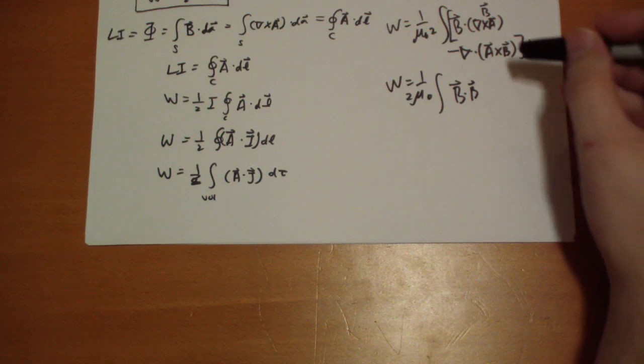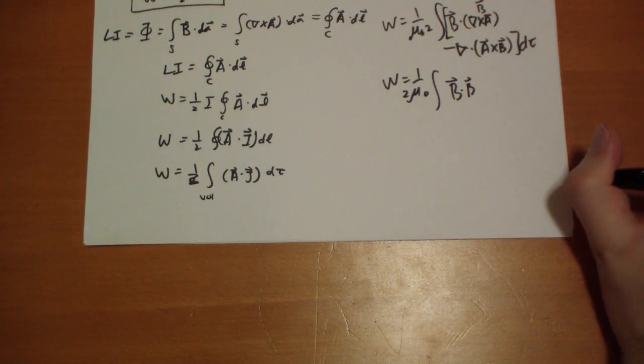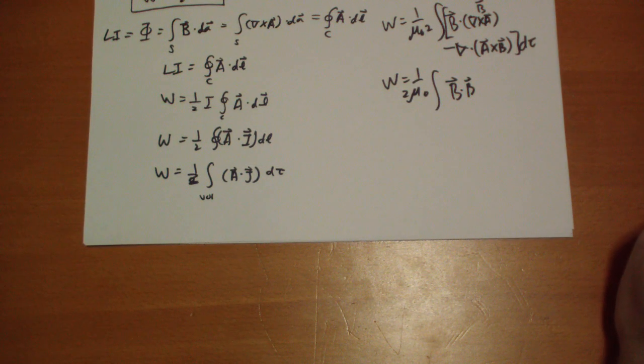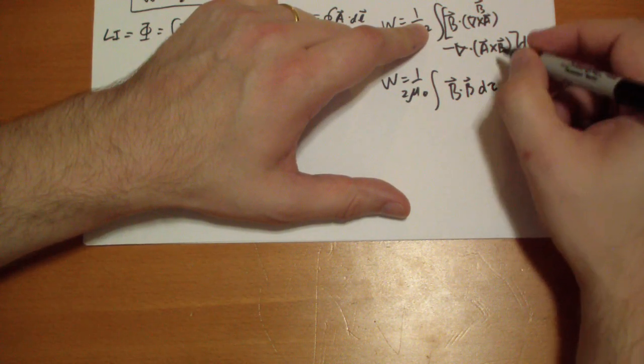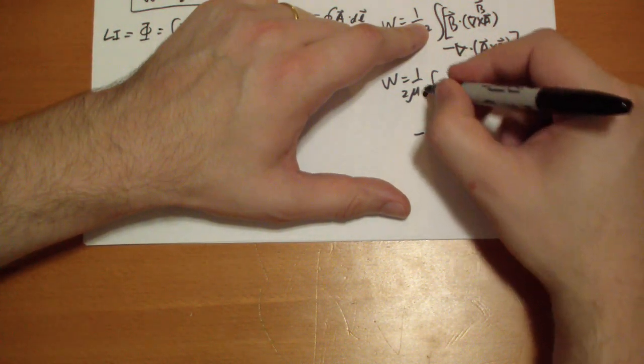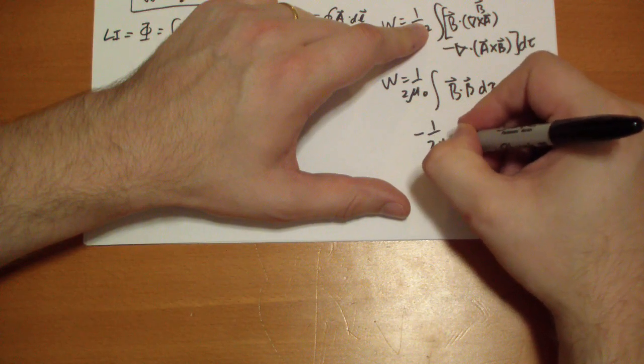The second one, well, here you have A cross B. And we can, oh, this is the divergence of something, so we can apply the divergence theorem. So let's take this one, let's apply the divergence theorem, minus one over two mu naught.